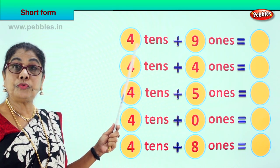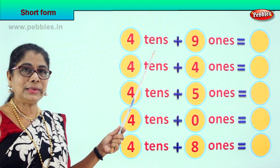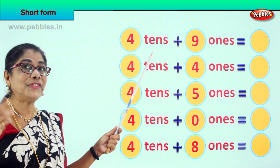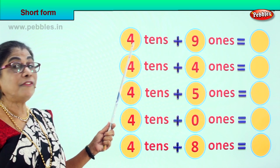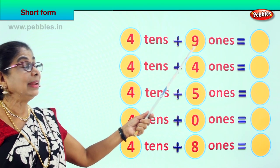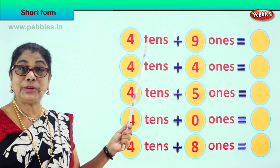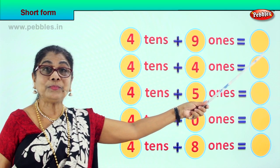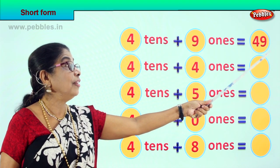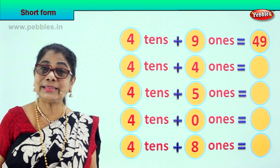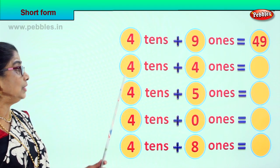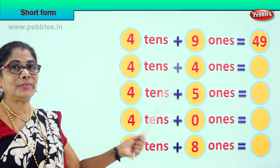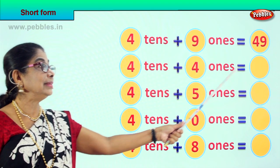You are becoming very clever. Now let's go on to another exercise. Read with me — four tens. What is four tens? One ten, two tens, three tens, four tens — four tens is 40. Four tens plus nine ones is equal to forty plus nine, equals 49. Four tens plus four ones is equal to 44.